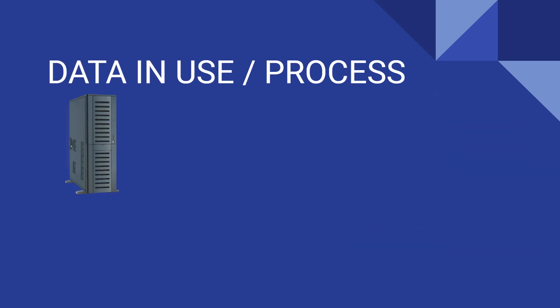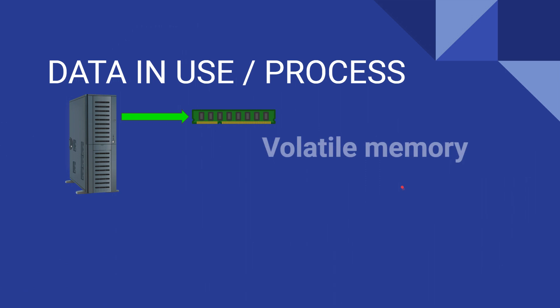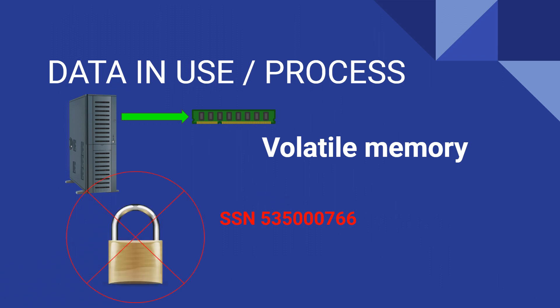Data in use is when the data is being processed into volatile memory or RAM. For example, we have this SSN — that same SSN that was on the last drive. It's not encrypted when it's in process; it's data that's in use. The SSN would be visible when it's in random access memory, so that presents a vulnerability for information security professionals.